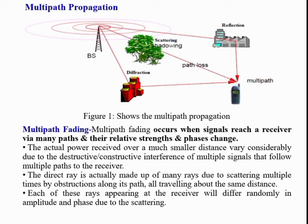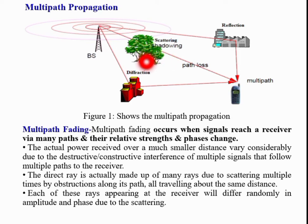A subdivision of small scale fading is multipath fading. To understand multipath fading, we first need to understand multipath propagation. From the base station, electromagnetic waves travel through different paths and experience different phenomena: reflection, scattering, and diffraction — all reaching the same mobile user. All these waves arriving at the same point have different attenuation and different delay.